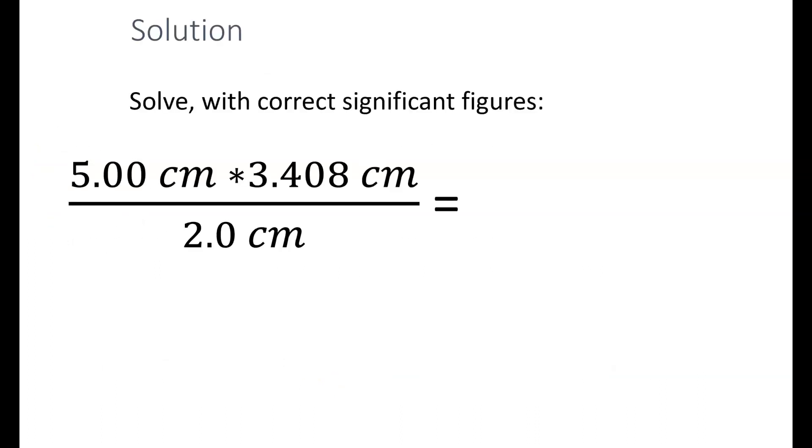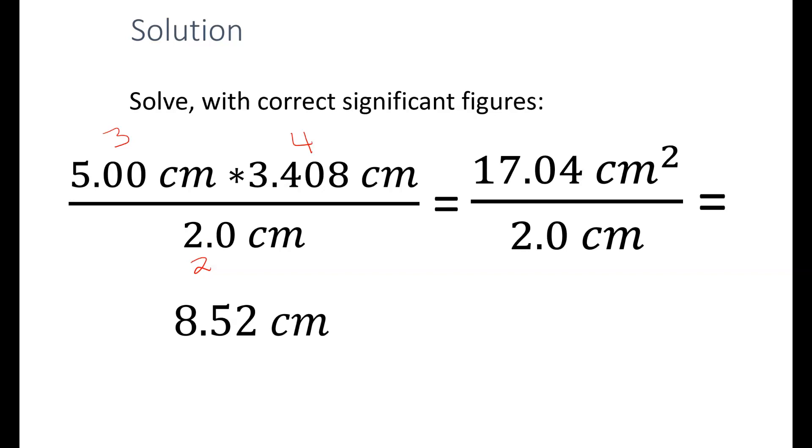Here's another example. 5.00 centimeters times 3.408 centimeters divided by 2.0 centimeters. We have three significant figures, four significant figures, and two significant figures. So, our final value is going to have to be rounded to two significant figures, or 8.5 centimeters.